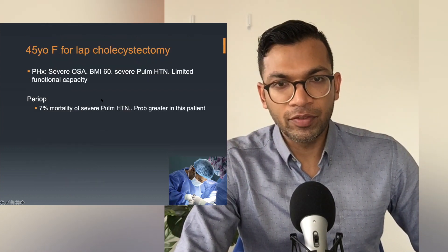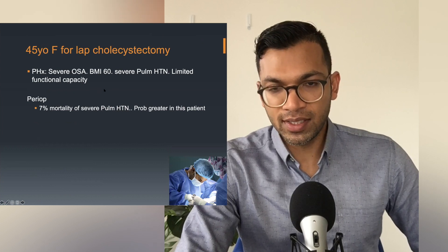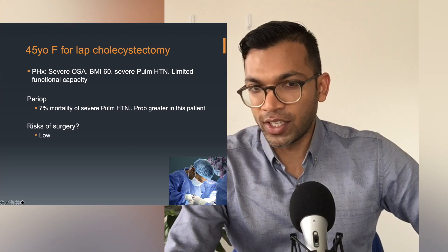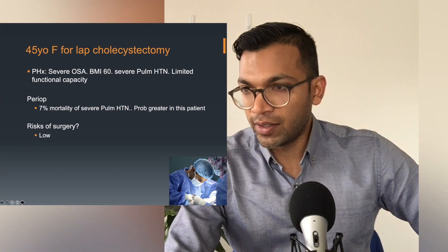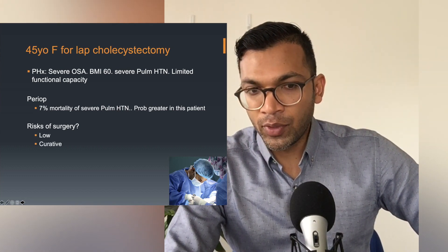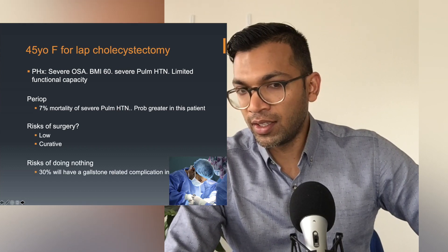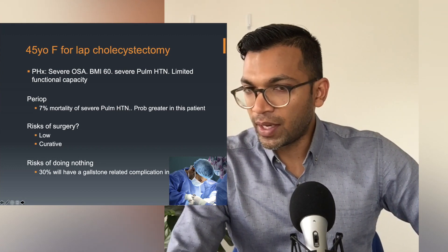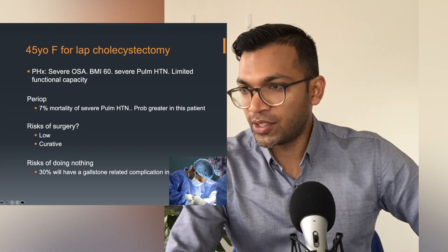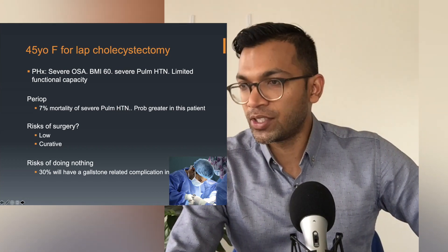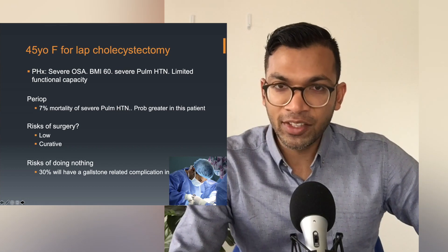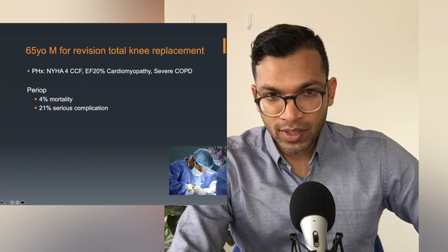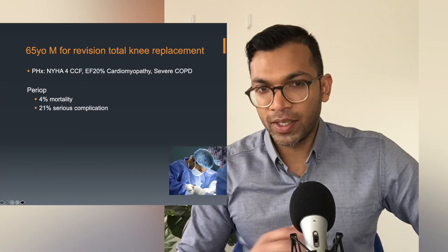Now consider a 45-year-old female for a laparoscopic cholecystectomy with a past history of severe OSA, BMI 60, severe pulmonary hypertension, and limited functional capacity. The risks of surgery are relatively low — once you get past the BMI issue they'll get the gallbladder out; it's not the highest-risk operation. But critically, what are the risks of doing nothing? In this patient, 30% will have a gallstone-related complication in the next 12 months. Suddenly my elective high-risk patient could become an emergency high-risk patient — and the surgeon agreed: they'd rather do this electively than urgently.